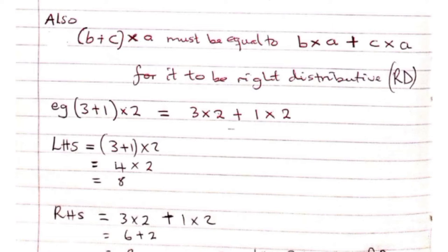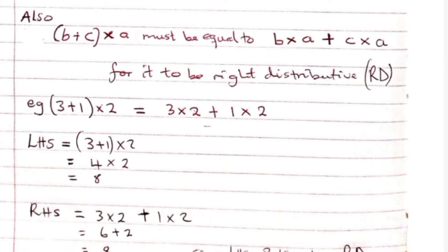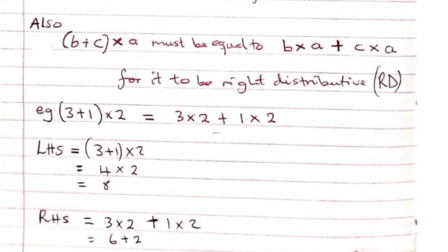Also, (B plus C) times A must equal B times A plus C times A. Here, A is on the right-hand side. We want to check if multiplication is right distributive over the plus sign. The answer when we add first and multiply by A must equal B times A plus C times A. If we get the same answers, we say multiplication is right distributive over the plus sign.